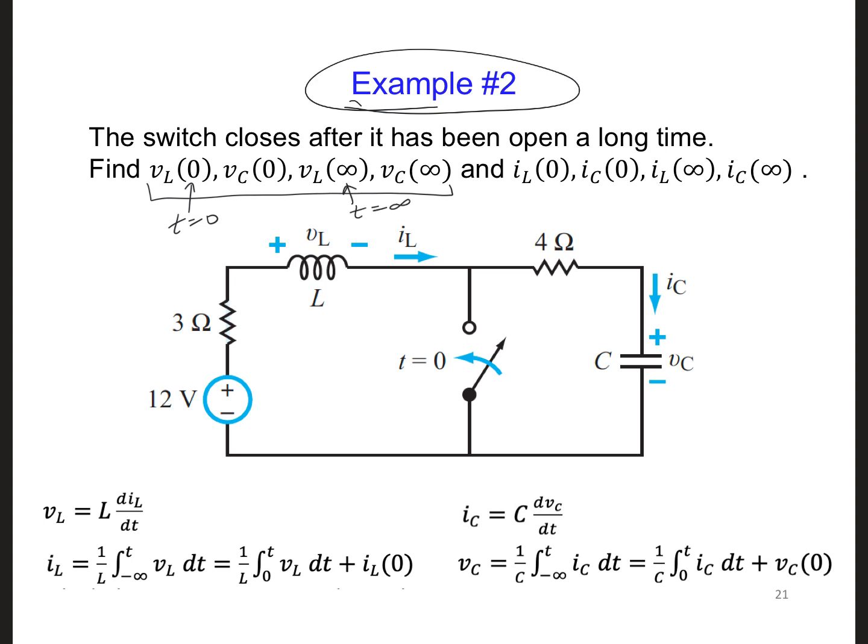And infinity here just means after a long time has passed, and so all the transients are gone. Things have either charged up or charged down. And then we also want to know the current right at time equals 0, right when the switch is closed, and then also after a long time has elapsed.